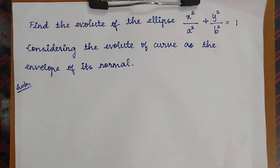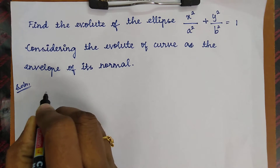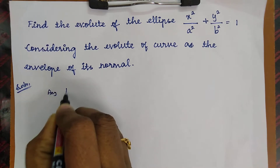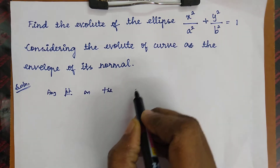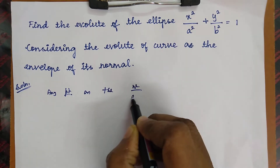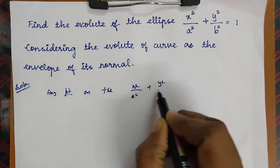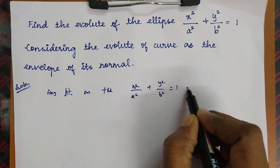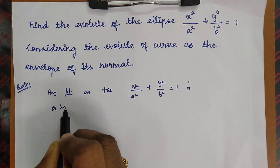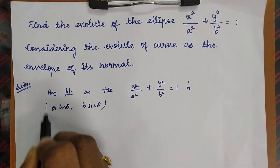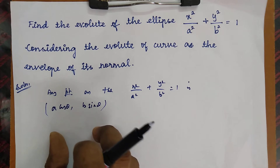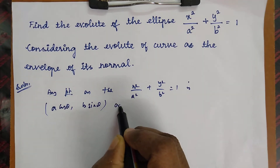We take any point on the curve x² / a² + y² / b² = 1. Any point on the given curve is (a cosθ, b sinθ), which is the parametric equation of the ellipse.